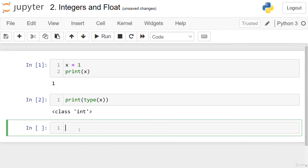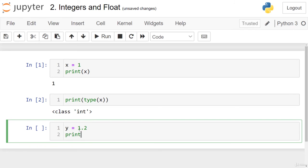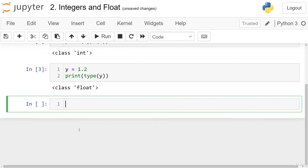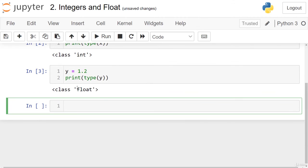If we have y equal 1.2, for example, and we print the type of y, we will have float. So this is an integer and this is float.